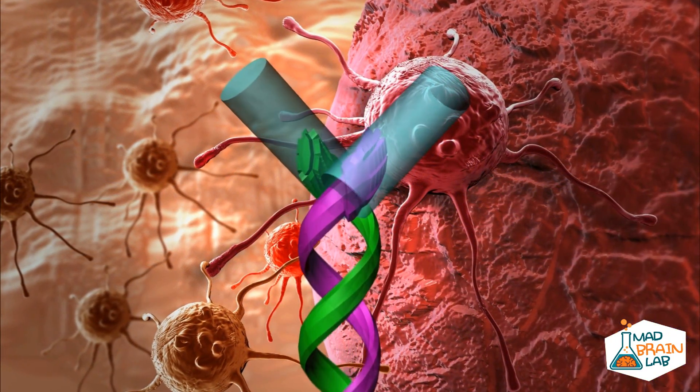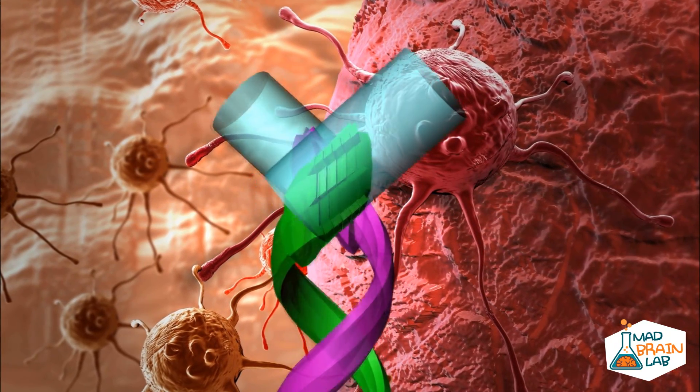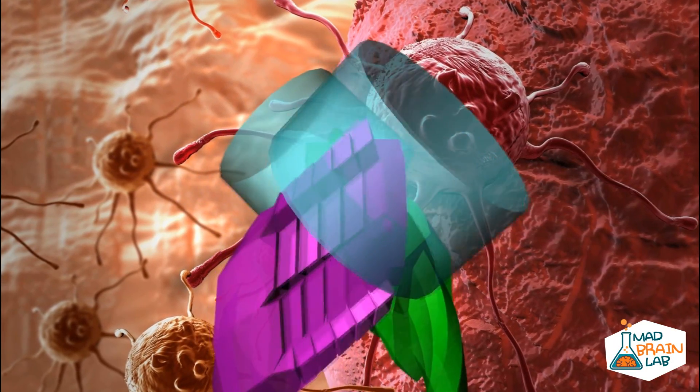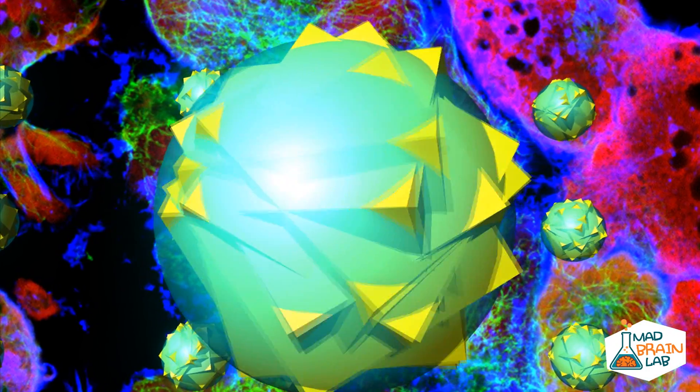One of the reasons we age is because each time the cell divides, protective caps on the end of DNA called telomeres get shorter. This is a ticking time bomb because when cells have divided enough and the telomeres are too short, they cannot replicate themselves anymore, and this is the reason for aging.